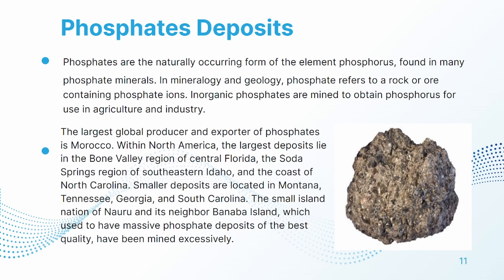Smaller deposits are located in Montana, Tennessee, Georgia, and South Carolina. The small island nation of Nauru and its neighbor Banaba Island, which used to have massive phosphate deposits of the best quality, have been mined excessively.